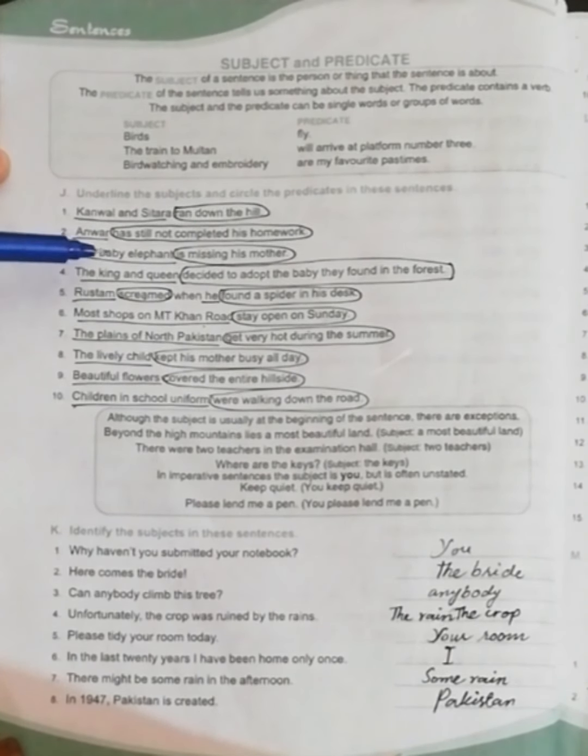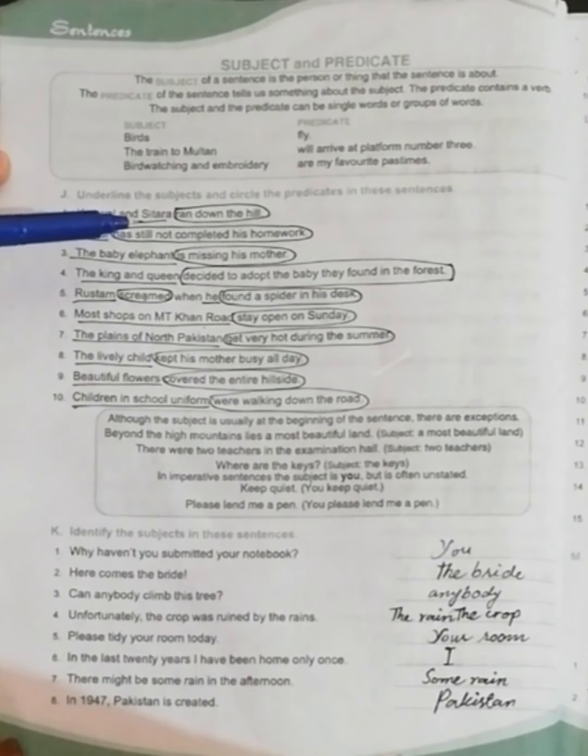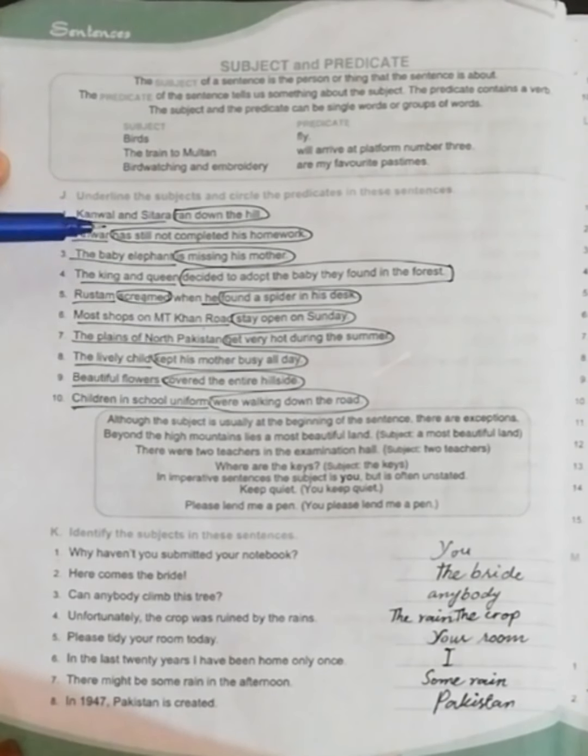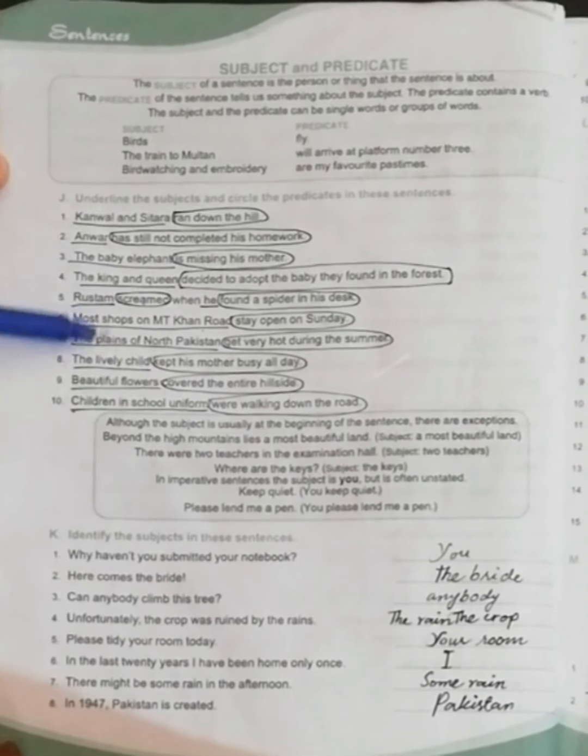Next one is 'The baby elephant is missing his mother.' So 'the baby elephant' is a subject and 'is missing his mother' is predicate. So in this manner you are going to learn these sentences and you are going to read these sentences on your own.